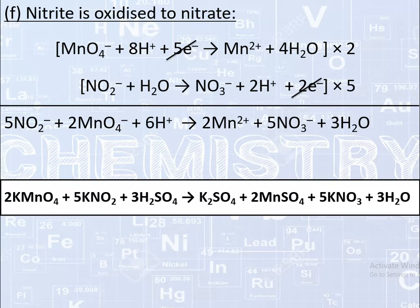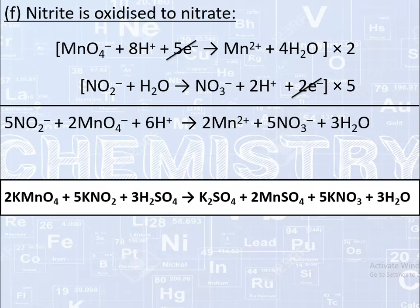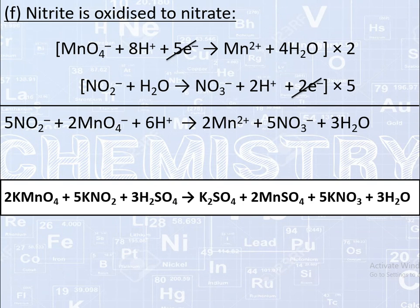If we know the reduction half-reaction of KMnO4, then by writing the oxidation half-reaction of the species being oxidized, we can balance any given reaction without memorizing all reactions individually. You just need to write the reduction half-cell reaction of KMnO4 in any medium and the oxidation half-cell reaction of the given species, then combine these two equations to balance the full reaction. Thank you.